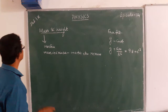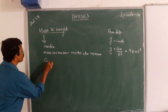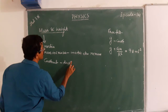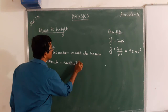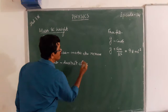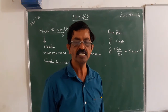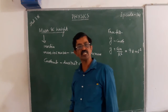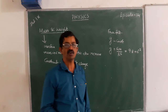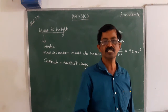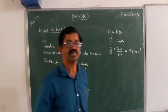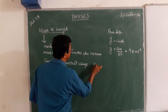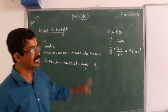Mass is constant — it does not change. It remains the same everywhere: on the surface of the Moon, on a planet like Jupiter or Mars, anywhere. The mass of a body remains the same. Mass is measured in the unit of kilogram.